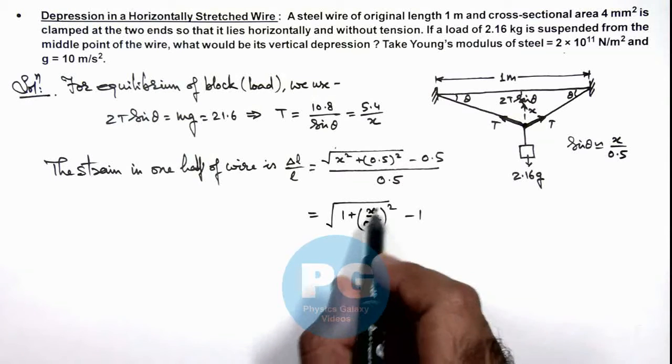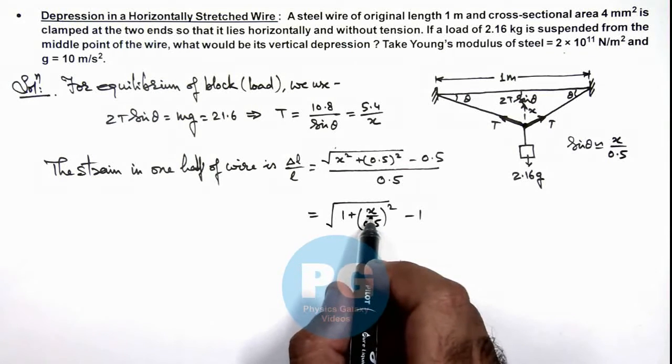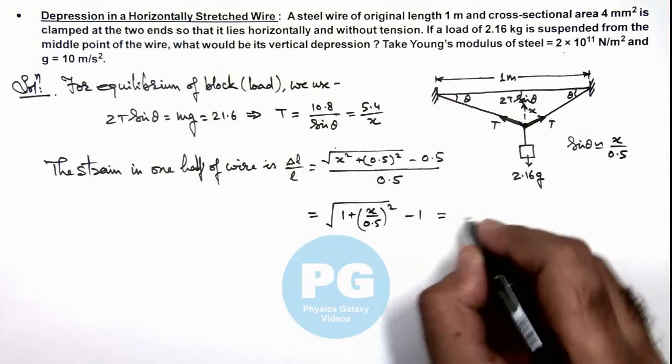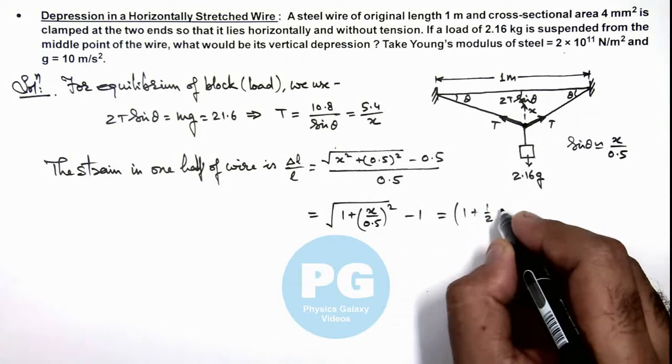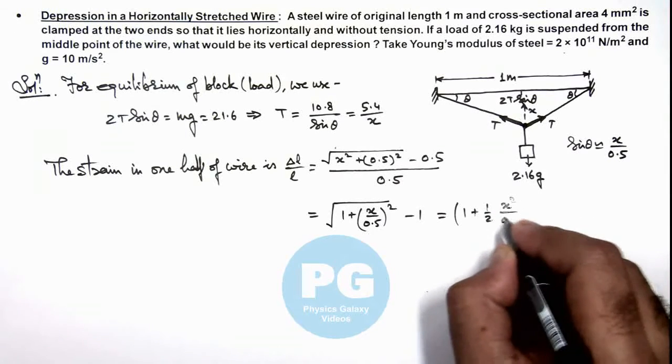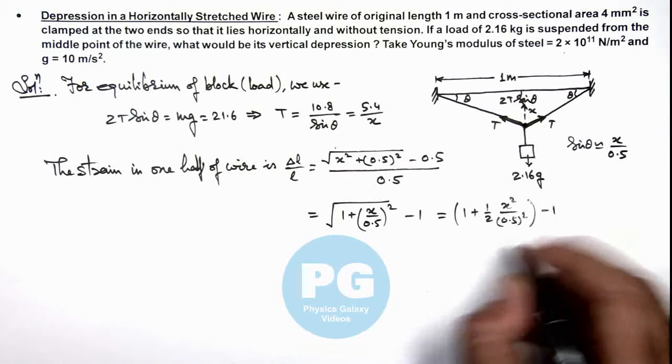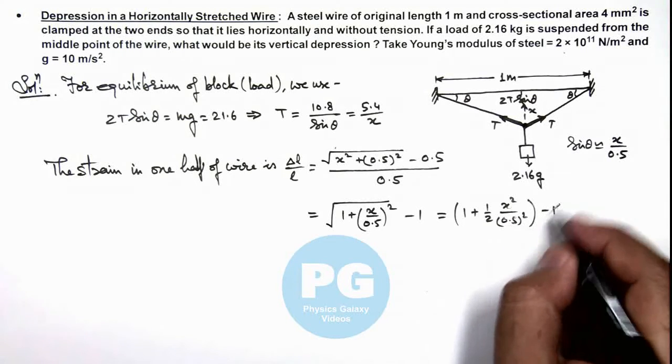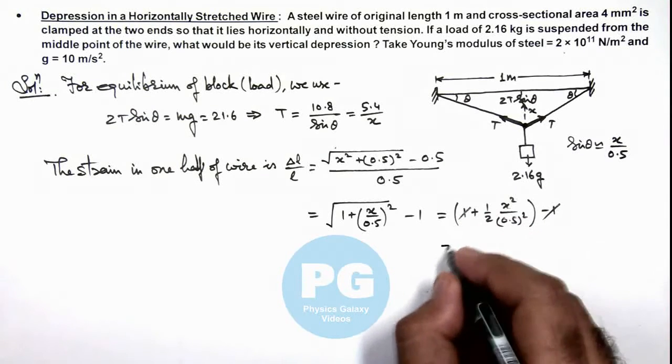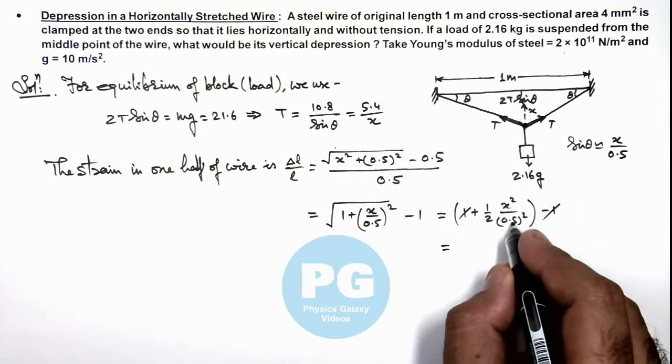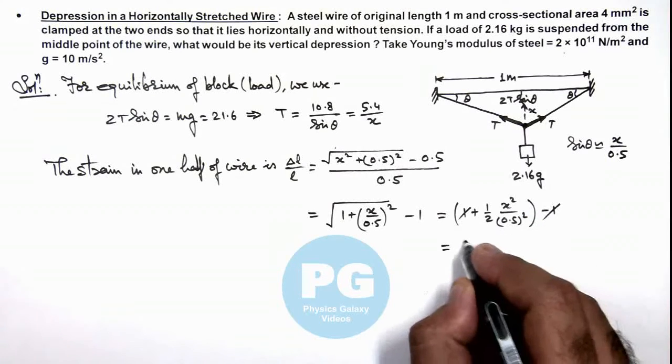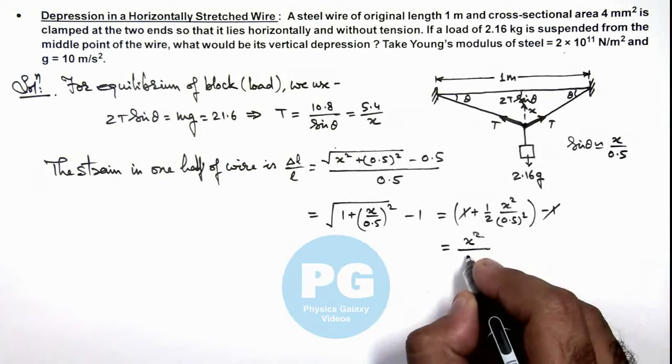In which we can apply binomial approximation as x is very small. This can be written as 1 plus half of x square by 0.5 whole square minus 1. And here this 1 gets cancelled out and we are getting the strain to be equal to x square by 2 multiplied by 0.5, so this is x square by 0.5.